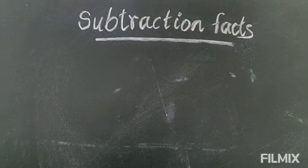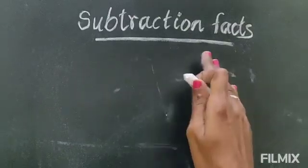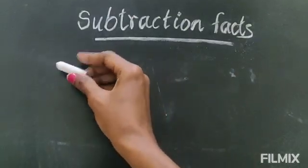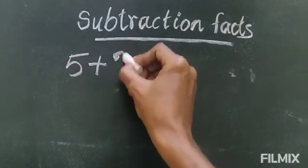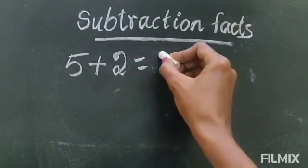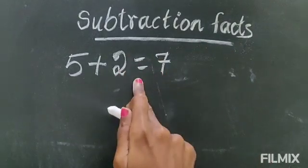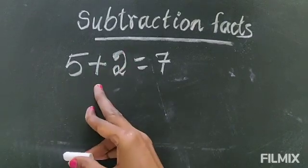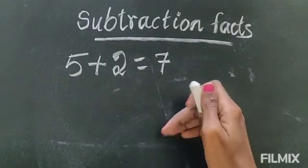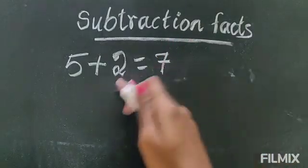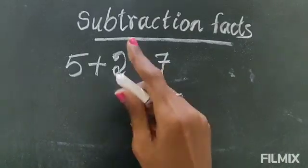Now we are going to see the subtraction facts. Now subtraction facts — if you have an addition, suppose 5 plus 2, how much? It is 7. So this is the addition fact. Now this addition has 2 subtraction facts. All additions, whatever the addition, they have 2 subtraction facts. And each subtraction will have 2 addition facts. So for this addition we can write 2 subtraction facts.